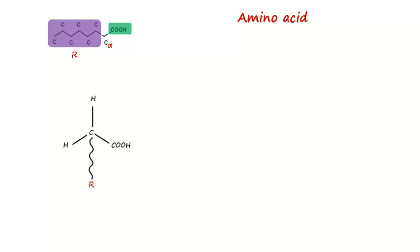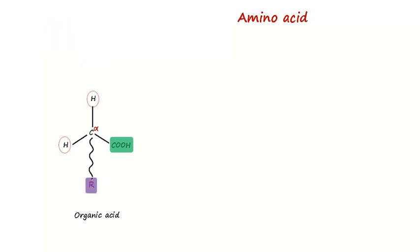Let's see the stereochemistry of the acid. In the middle is positioned the alpha carbon. Notice the carboxylic group, two hydrogens, and the radical group. This is an organic acid. If we substitute one of the hydrogens with an amino group, we will produce an amino acid.